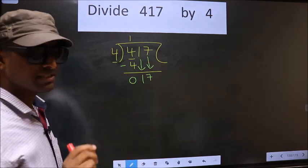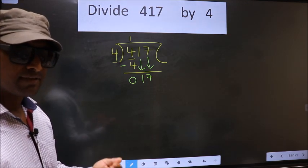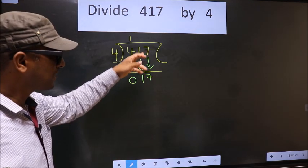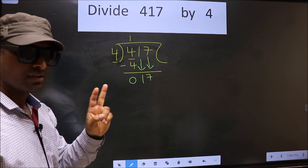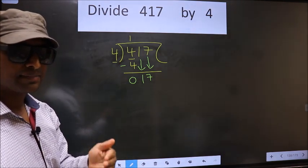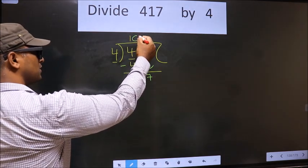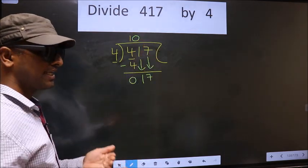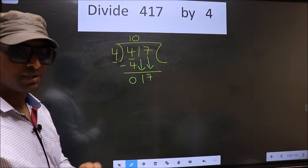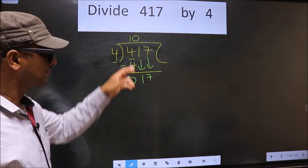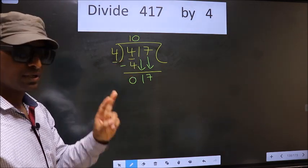Here you should remember this point: whenever you are bringing down two numbers at the same time, you must put 0 in the quotient. I repeat: whenever you are bringing down two numbers at the same time, you must put 0 in the quotient. Remember this point.